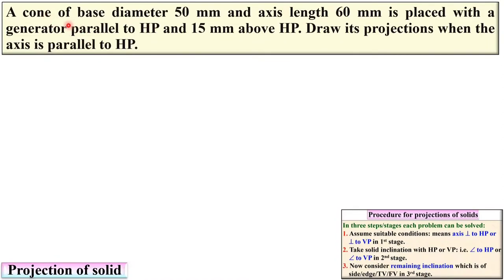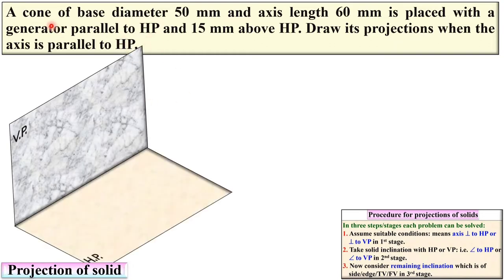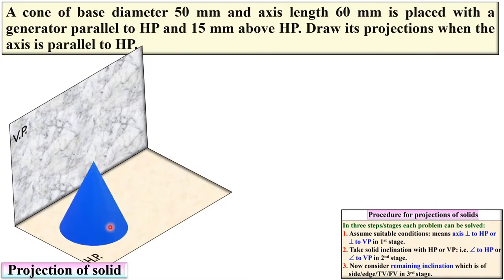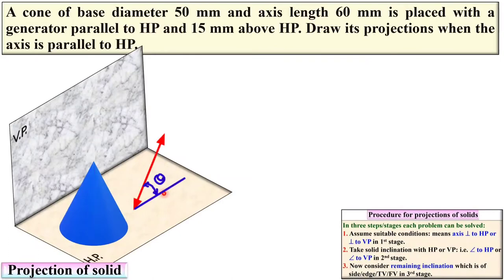In the description, the cone of base diameter 50 mm is placed with a generator parallel to HP. Looking at the position of the cone: the base is on HP so the axis of the cone is perpendicular to HP in Stage 1. Therefore, in Stage 2 the axis is inclined to HP such that the generator of the cone is parallel to HP.